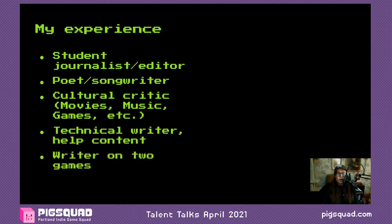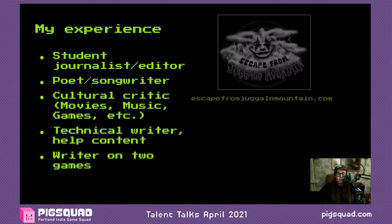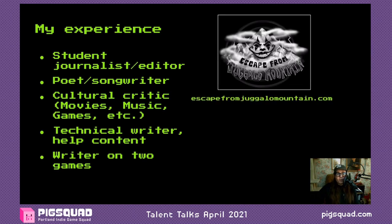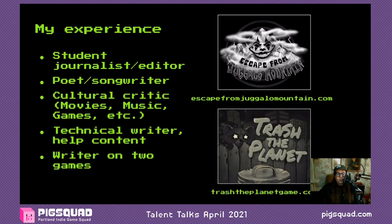Most importantly, I've been a writer on two games. The first one is called Escape from Juggalo Mountain — a piece of interactive fiction made in Twine about a teenage girl growing up in a separatist society of juggalos, free at escapefromjuggalomountain.com. The other game that just came out last month is called Trash the Planet — an incremental resource management game about raccoons who take over the planet. You can play it free at trashtheplanetgame.com. I've written in a lot of different contexts, so this is where I'm coming from.